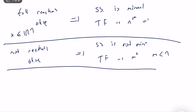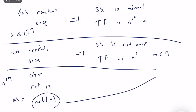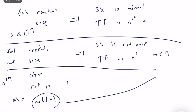If your system is, for example, observable but not reachable, we know it's not minimal and the transfer function has order m less than n. We have a reachability matrix and computed its rank, which equals m. If the observability matrix is full rank and the system is fully observable, the rank of the reachability matrix dictates the order of the transfer function. Similarly, if the system is fully reachable but not observable, the rank of the observability matrix will dictate the order of the transfer function.